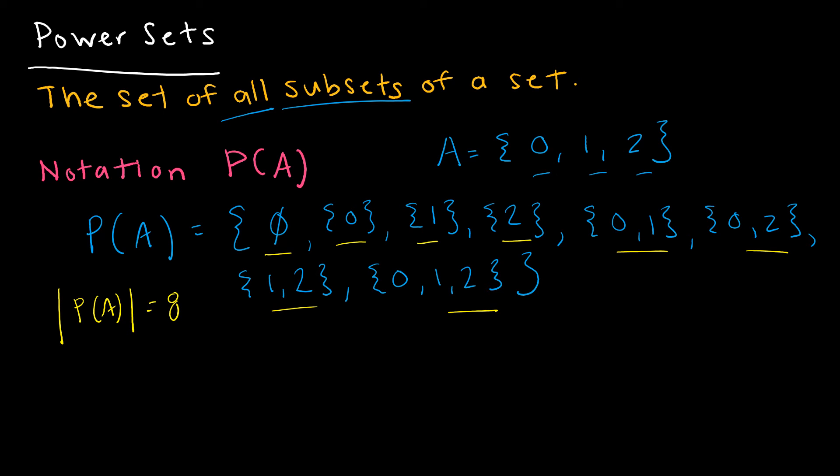And again, we'll talk more in depth about this later, but if you ever want the cardinality of the power set of a set with n elements is 2 to the n. So here I had three elements, and therefore 2 to the 3rd was 8, and that is exactly how many we found.